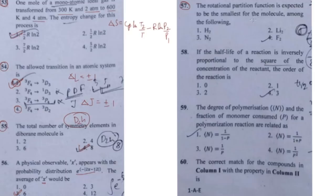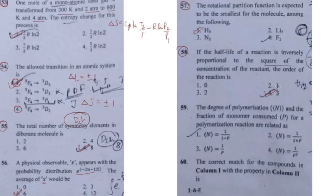Question 57 asks which molecule has the smallest rotational partition function. The rotational partition function depends on moment of inertia, which depends on reduced mass. The lightest molecule will have the smallest rotational partition function, so option number one is correct. Question 58: the half-life of a reaction is inversely proportional to the square of the concentration of reactants. This directly means the reaction order is three — for third order, t½ is inversely proportional to the square of concentration.